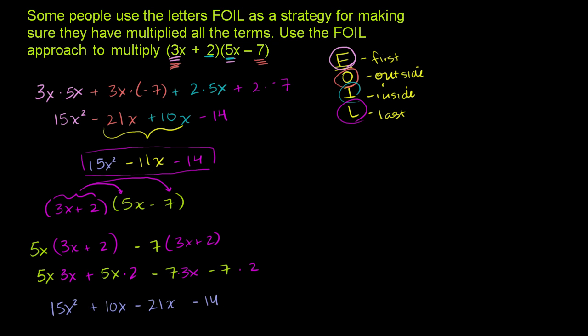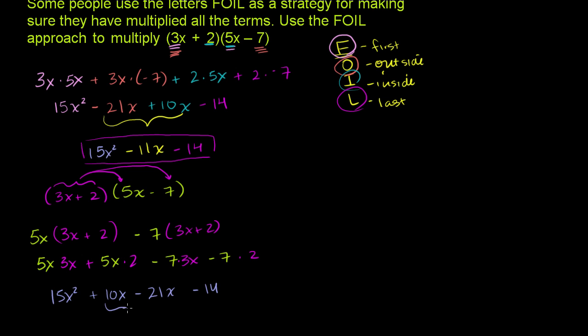And just like we saw up here, these two terms can be merged into 10x minus 21x is negative 11x. So we get 15x squared minus 11x minus 14.